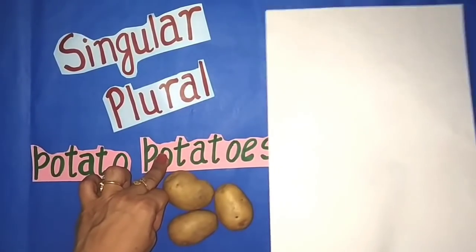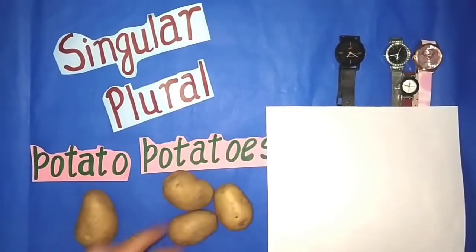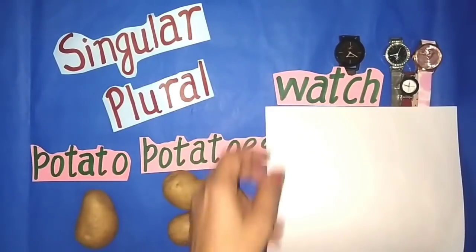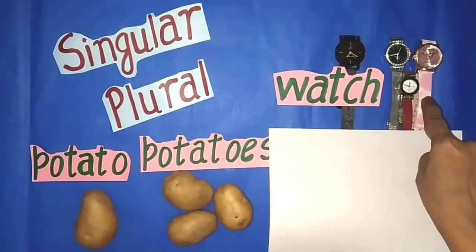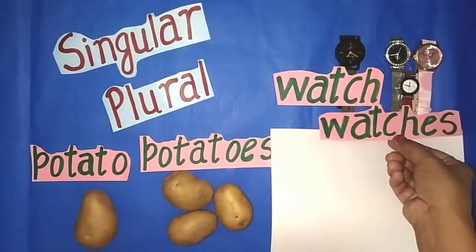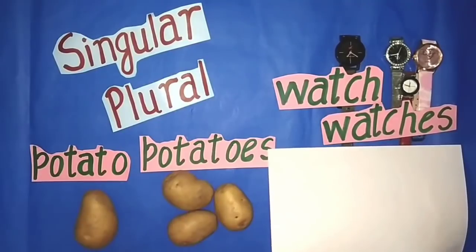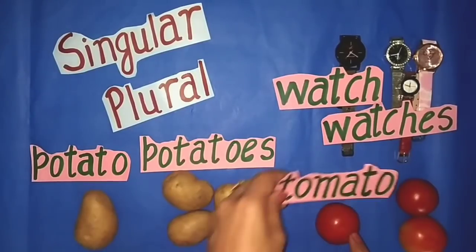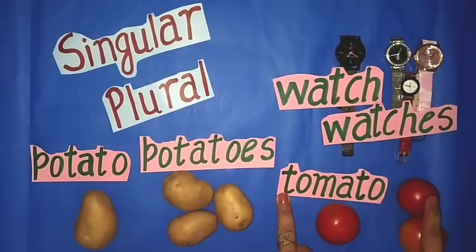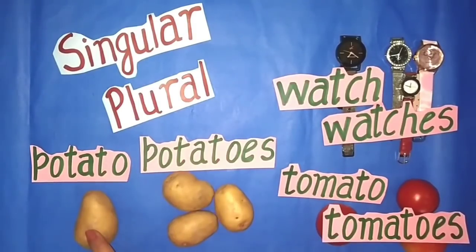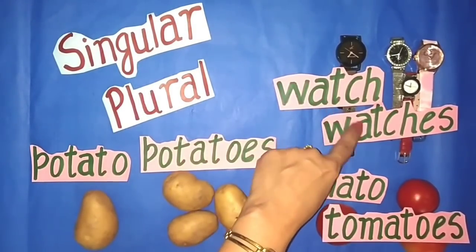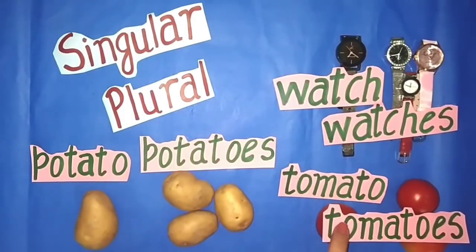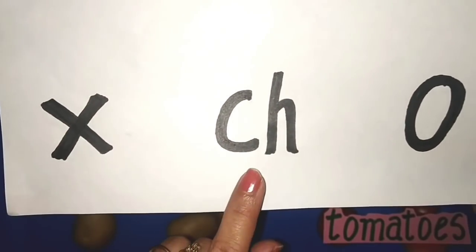Here you can see: watch — one watch — and for more than one watch we will write watches. Watch, watches. Our next word is tomato — one tomato — and for more than one tomato we will write tomatoes. Potato, potatoes; watch, watches; tomato, tomatoes.